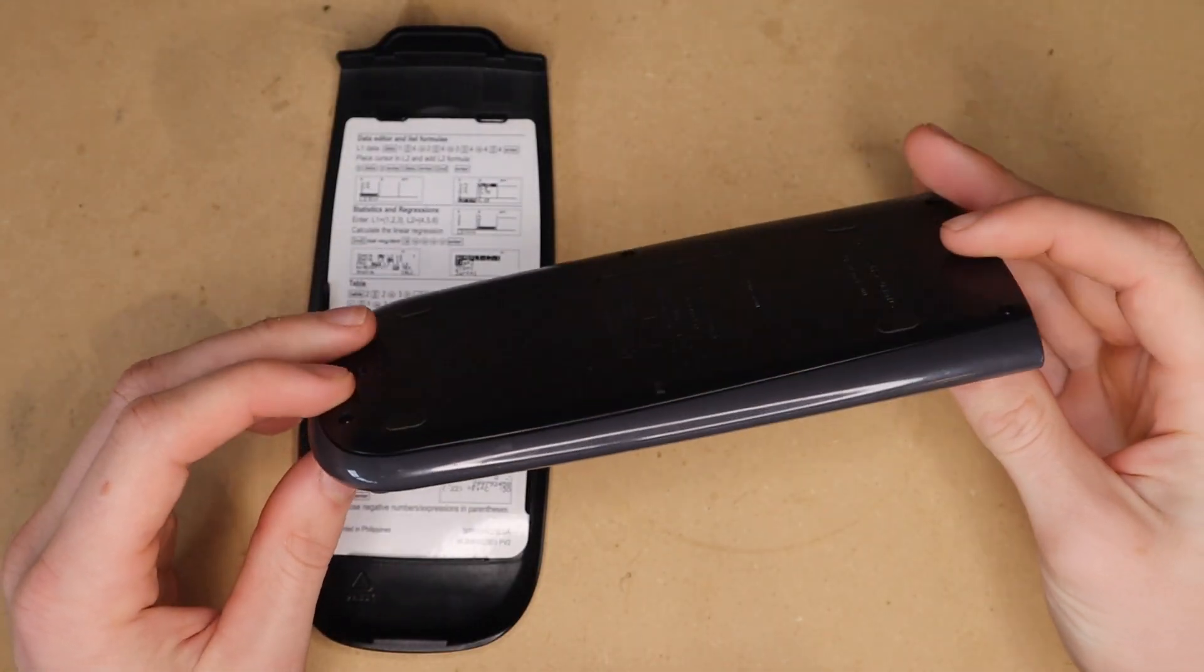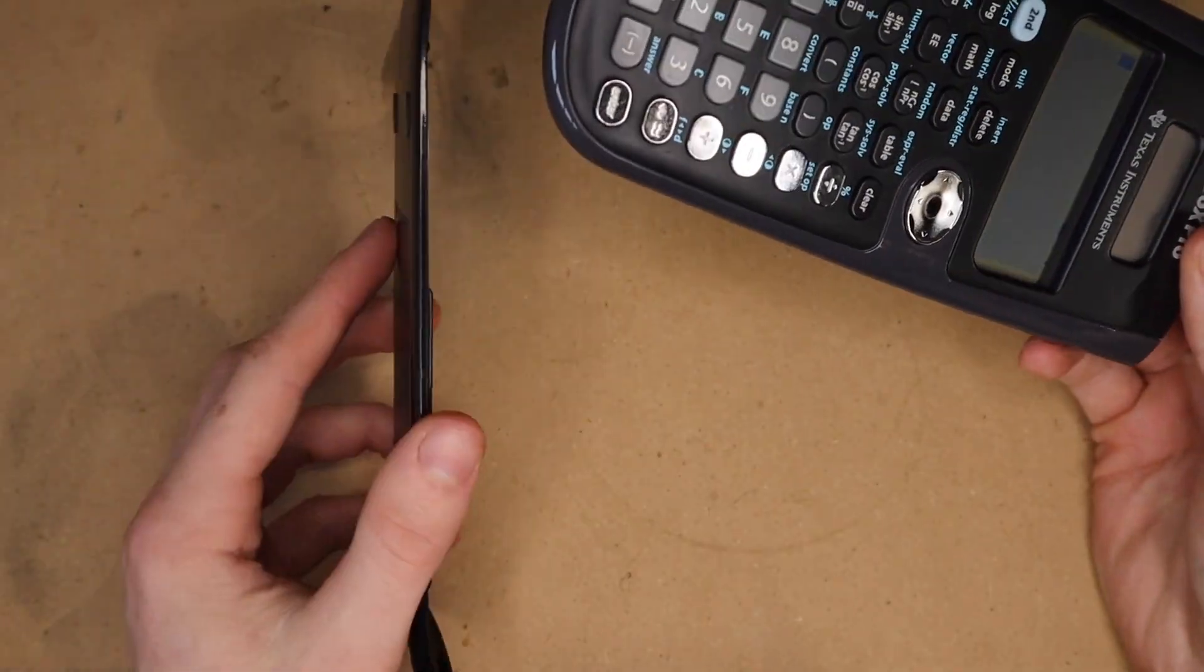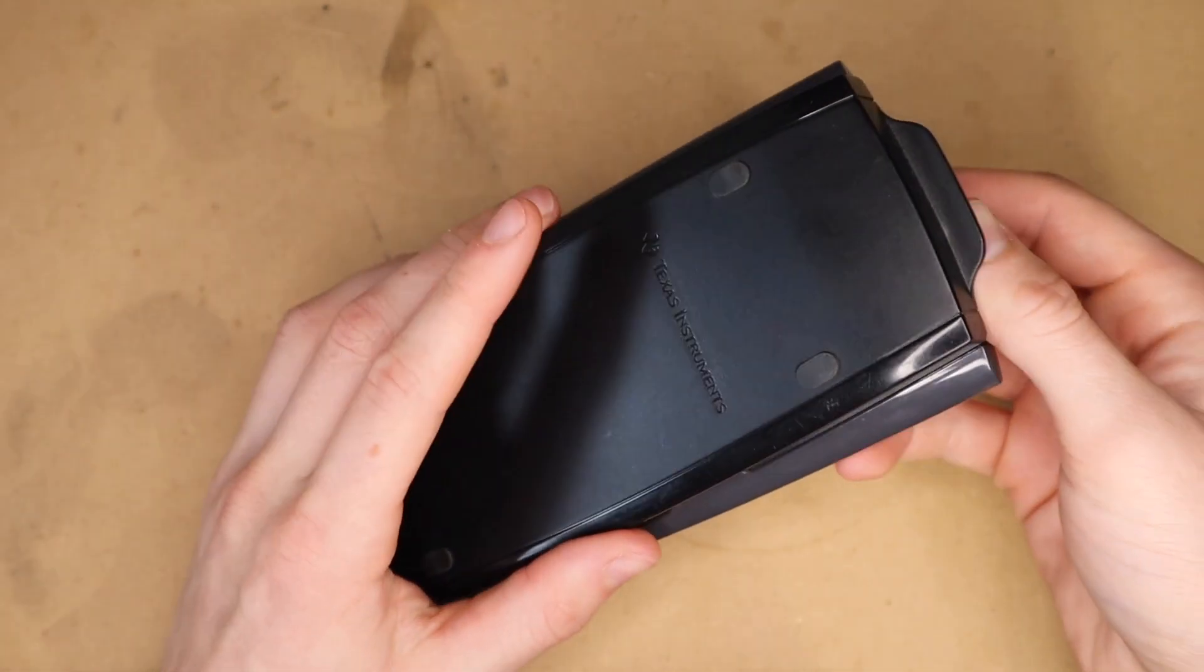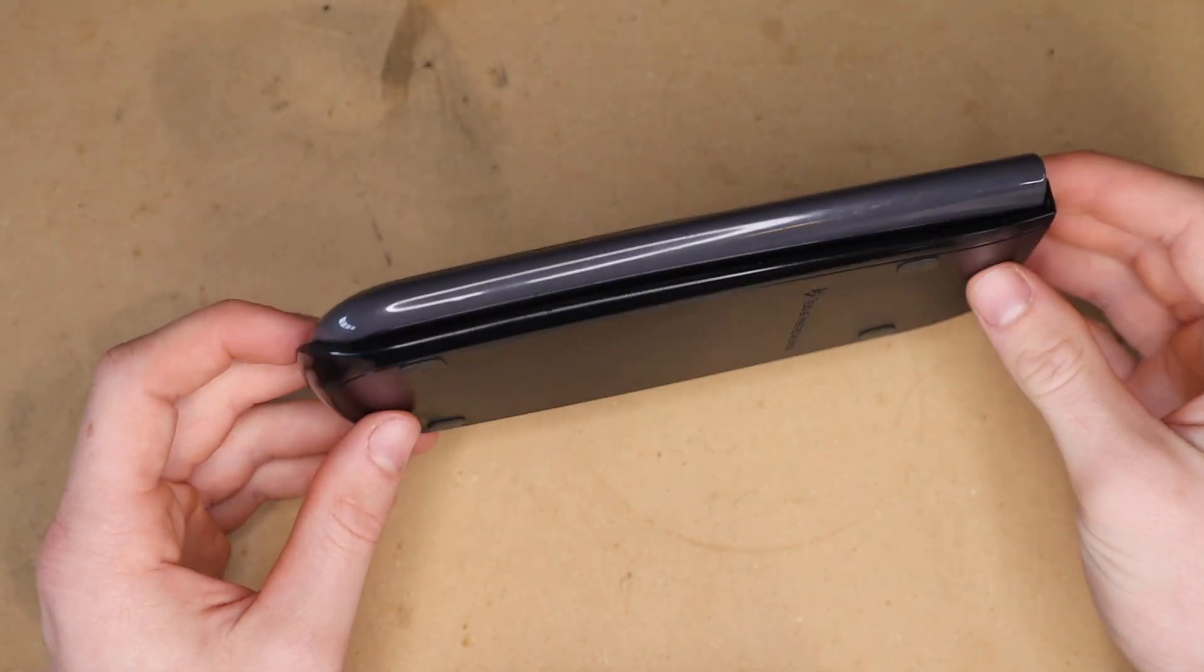It's thin, it's light, and it has a pretty simple design. It comes with this case that fits over the front and covers all the buttons and screen.